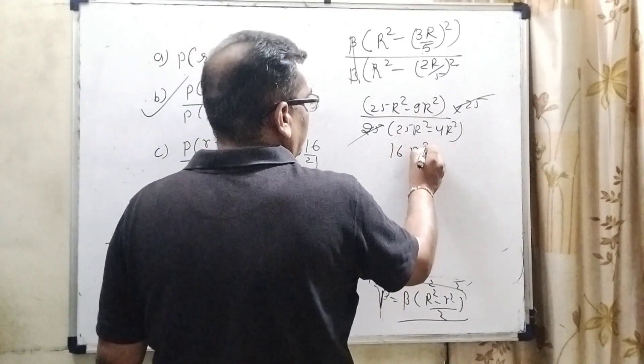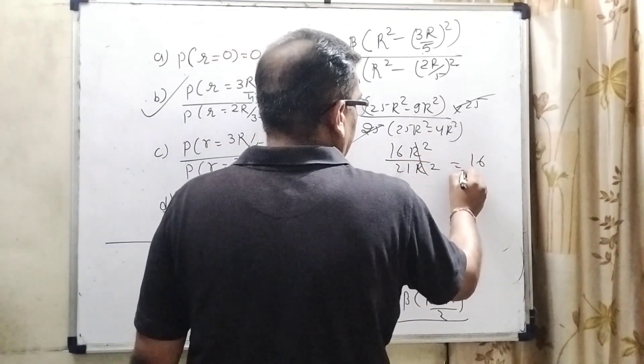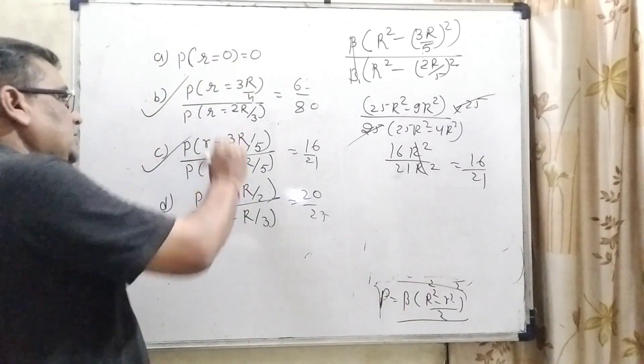16 r square and this is 21 r square. This is 16 upon 21. Yes, this C option is also correct.